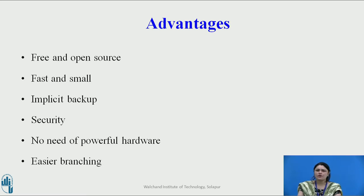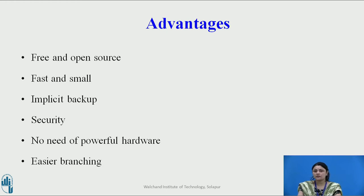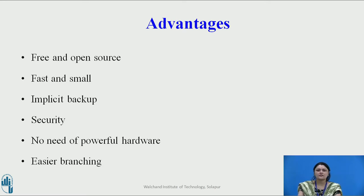You also do not need powerful hardware. In a centralized VCS, central servers need to be powerful enough to serve the entire team's requests — this becomes a performance bottleneck as team size grows. In a distributed system, developers don't interact with the server unless they need to push or pull changes. All the heavy lifting happens on the client side, so the server hardware can be very simple.